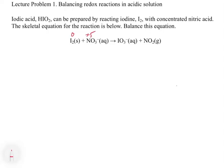For IO3 minus, 3 times -2 is -6, and with a -1 overall charge, we get a +5 oxidation state on the iodine. For NO2, the nitrogen has a +4 oxidation state because we have 2 oxygen at -2 each. So our iodine is being oxidized to +5, and our nitrogen in the nitrate is being reduced from +5 to +4.